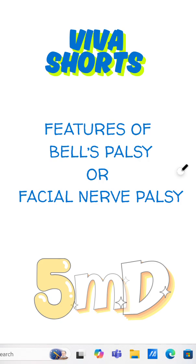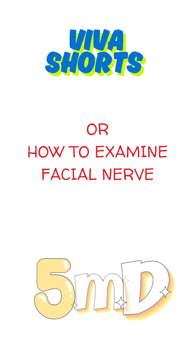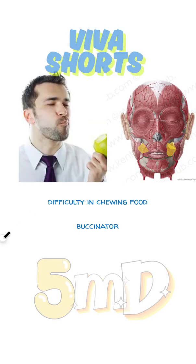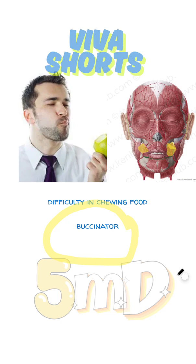This is a short way to remember the features of Bell's palsy, or facial nerve palsy, and how to examine the facial nerve in general surgery exams. Difficulty in chewing food — if the patient complains of that, or you ask the patient to chew food during the examination — is because of buccinator paralysis. The facial nerve supplies the muscles of facial expression, so all those muscles will be affected. Difficulty in chewing food suggests the buccinator is paralyzed.